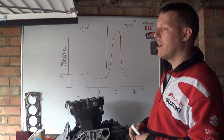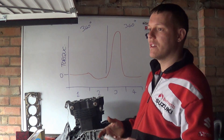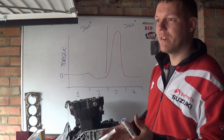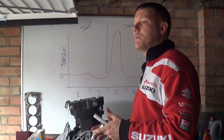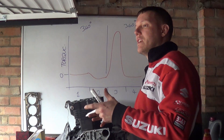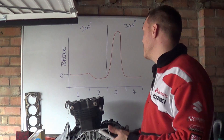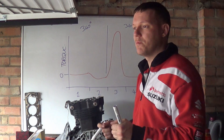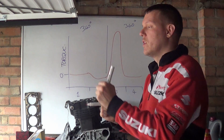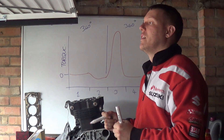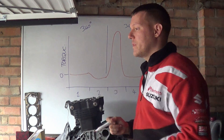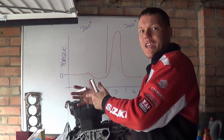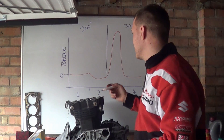So what happens if you have a parallel twin or something like that? Well, it depends how you arrange it — and this is why cylinder arrangement is set by the crankshaft arrangement. The crankshaft arrangement, where your crank pin is, how the two pistons move — whether they move together or opposed — each one changes the characteristics of the engine.